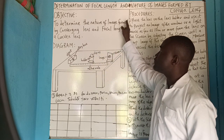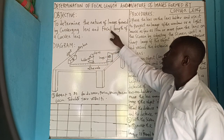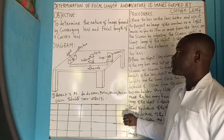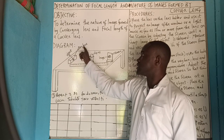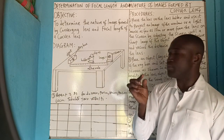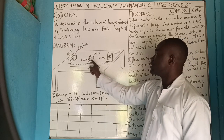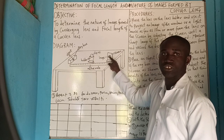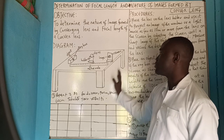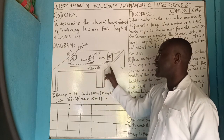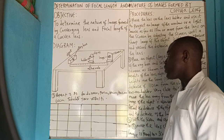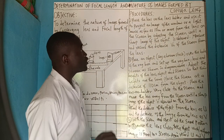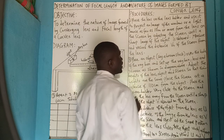The objective is to determine the nature of image formed by a converging lens and the focal length of that converging lens. Look at the apparatus setup: this is the object — a broomstick — this is the ray box, this is the lens holder, this is the lens itself, this is the image, this is the screen, and this is the table stand where the whole thing is set up. This is the meter rule.